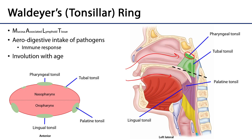Just posterior to the opening of the auditory tube we have the tubal tonsils. These tubal tonsils are very small, discrete clumps of MALT tissue that deal with materials as they may enter into the auditory tube.